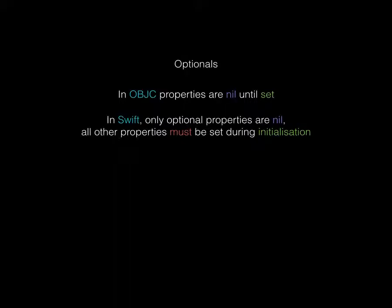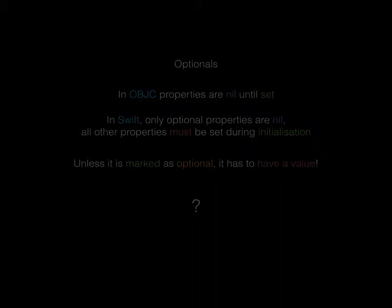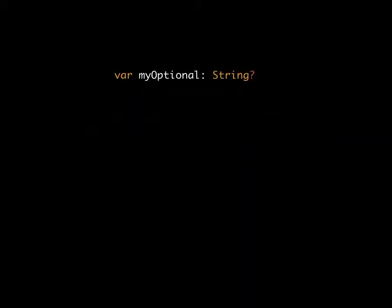That is not at all how it works in Swift. In Swift, all properties that are optional will default to nil, and all other variables have to have a value. So you know that if a variable is marked as optional it may or may not have a value, but if it does then it will have a value at runtime — this is enforced by the compiler. It will never be possible to send a message to an object and get silent failure in Swift.